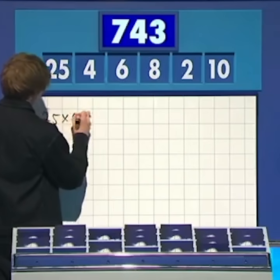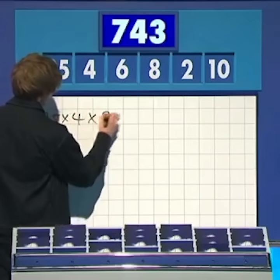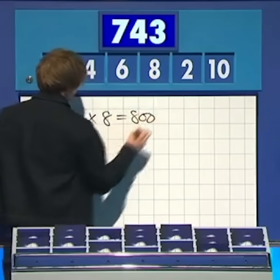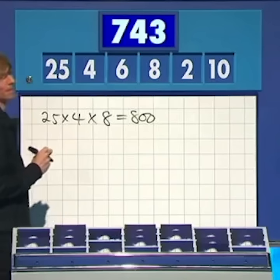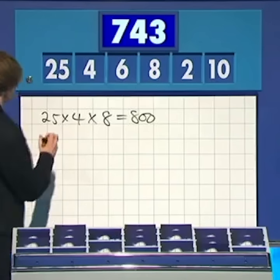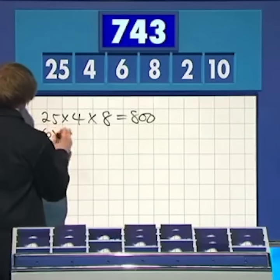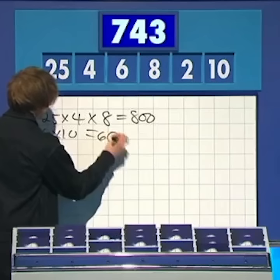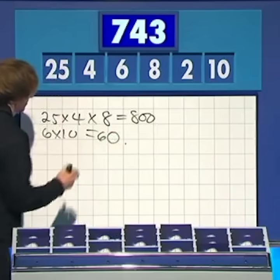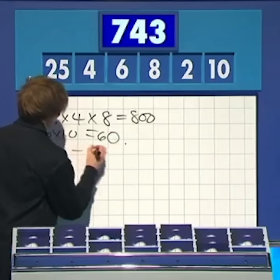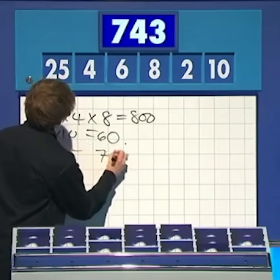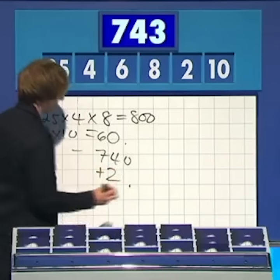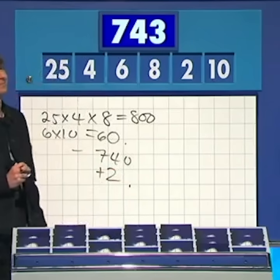25 times 4 times 8 gives you 800. 6 times 10 is 60. Take it away and add the 2 — subtract them, you'll get 740, and then add the 2: 742.